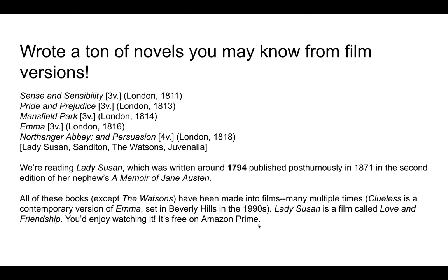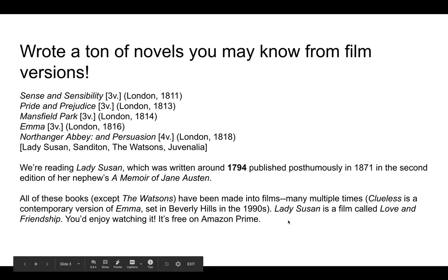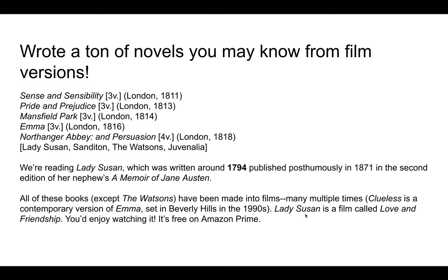All of these books have been made into films, many of them multiple times. You might remember the movie from the 1990s called Clueless, with Alicia Silverstone, set in Beverly Hills — that's a contemporary version of Emma. And Lady Susan also has a film adaptation. Just recently, I think from 2017, a film was released called Love and Friendship. It is on Amazon Prime and it's free, and I think you would very much enjoy watching it. But do keep in mind that the book is different from the film, so please read the book instead of just watching the movie.